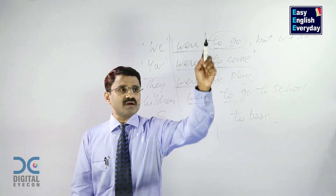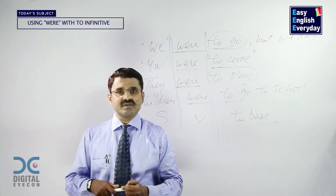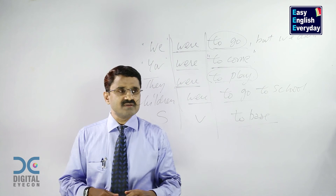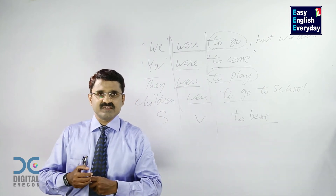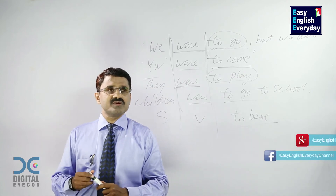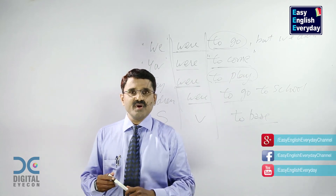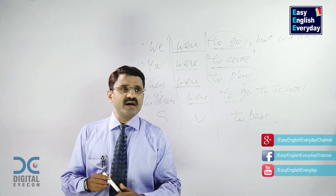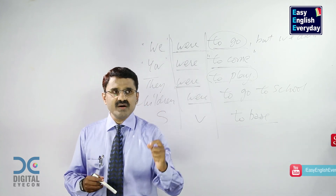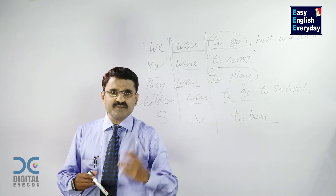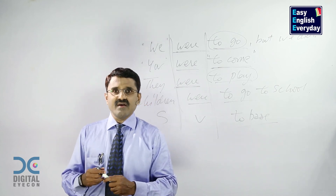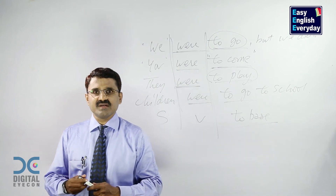So, when you want to talk about any action which was to be done compulsorily in the past, you have to use this type of sentence. Friends, this is the eighth and the last use of were. I hope you have enjoyed this video — try to learn as much as possible about 'were' and make use of it in eight different ways by making a large number of examples. Have a great time. This is Jay Balakrishna signing off.